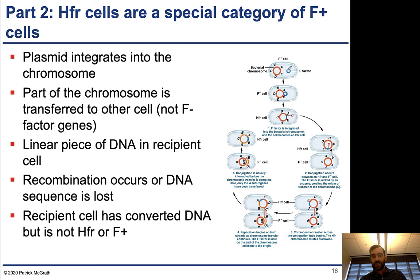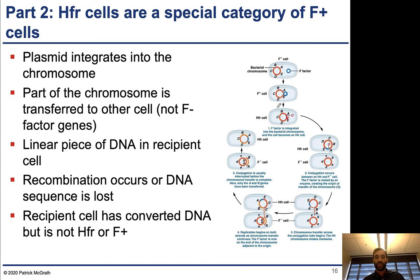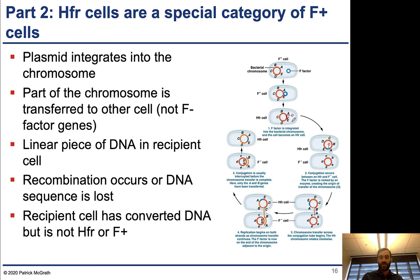When the F-factor plasmid DNA gets inserted into the bacterial chromosome, all those genes that encode the pili, the proteins necessary for transferring DNA, and the origin of transfer are now actually on that chromosome. When this occurs, we say that an Hfr cell has been created — Hfr for high frequency recombination. These cells still encode everything necessary to build pili and are competent to transfer genetic material.